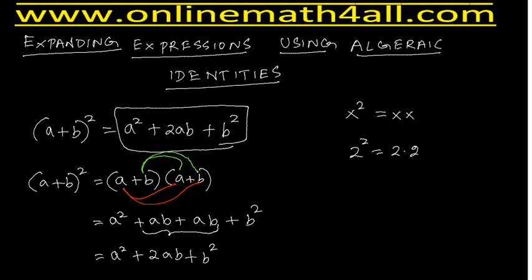This is how we get the result for a + b whole square. But when we have this algebraic identity, we don't always have to do all those steps. We should remember that a + b whole square is equal to a² + 2ab + b². I explained the derivation just so students understand where it comes from, but always remember: a + b whole square equals a² + 2ab + b².